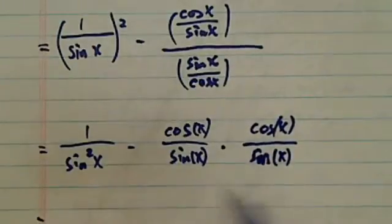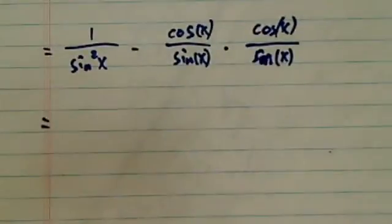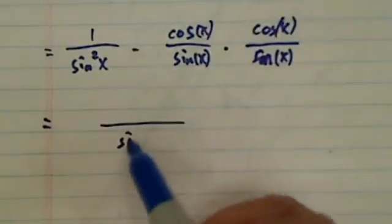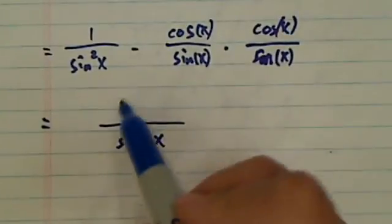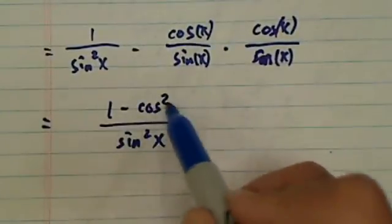And then from here you can see the common denominator is really sine of x, which is very convenient, right? Here you have 1 minus cosine square of x.